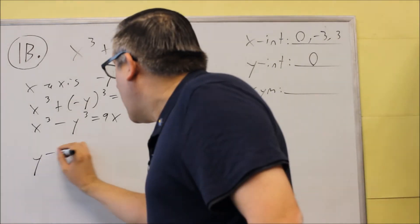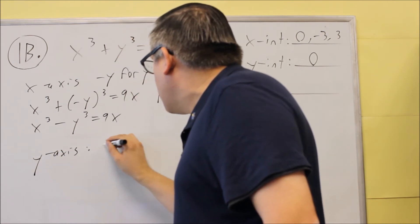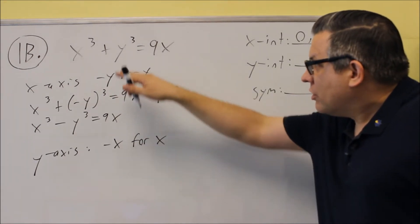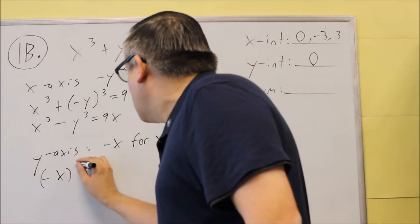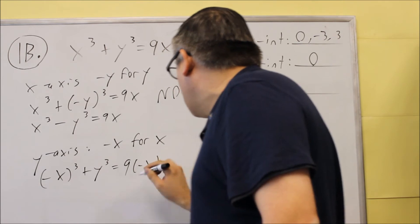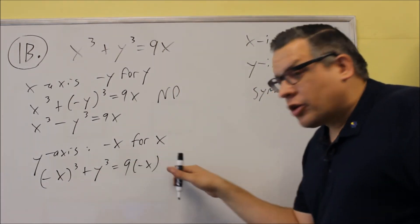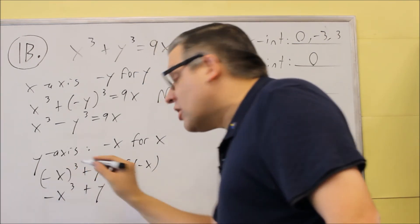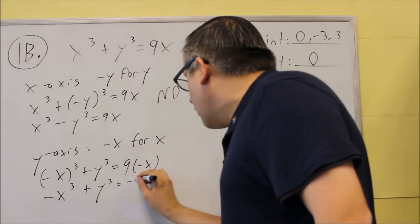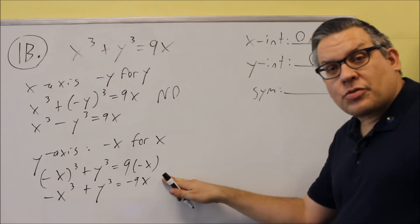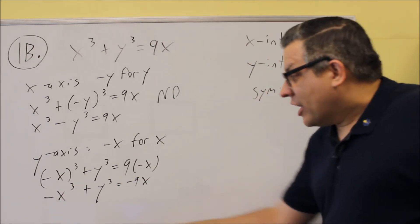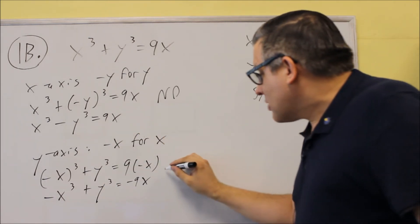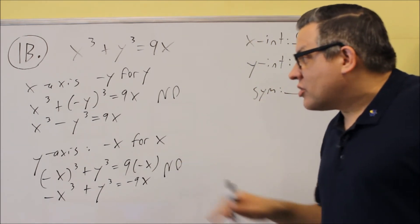Next, y-axis symmetry: we substitute negative x for x in the original equation. We get (negative x) cubed plus y cubed equals 9 times (negative x), which simplifies to negative x cubed plus y cubed equals negative 9x. Multiplying through by negative one still leaves the middle term negative, giving the same result. So this equation does not have y-axis symmetry either.